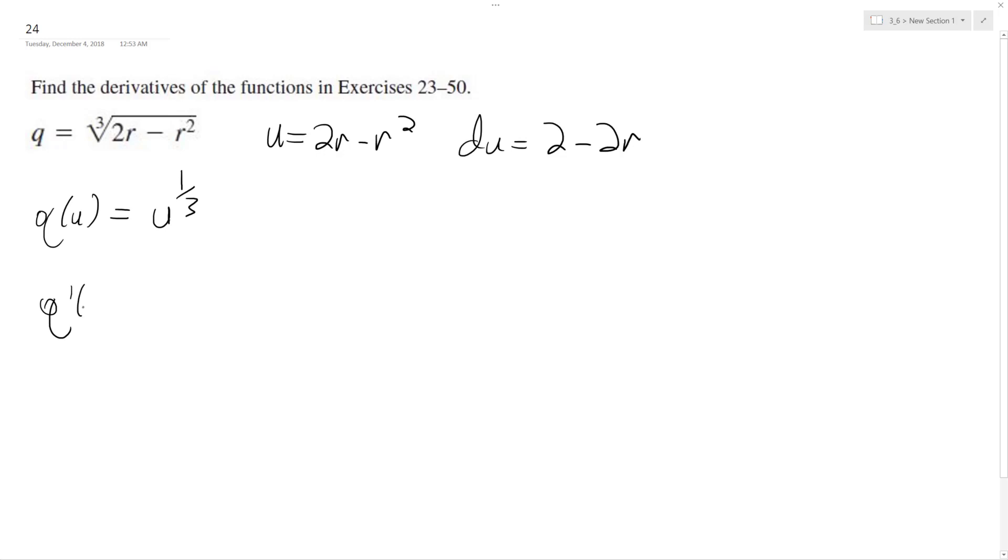So Q prime of U is going to be equal to 1 third. Bring that down. U raised to the negative 2 thirds times DU. Sub everything in.